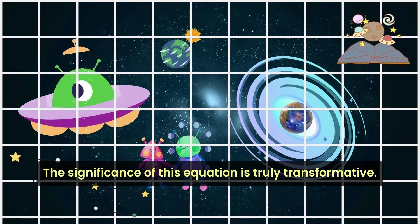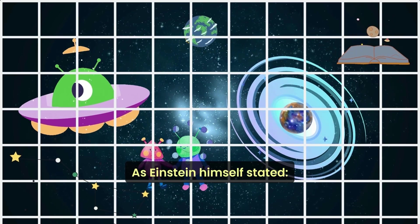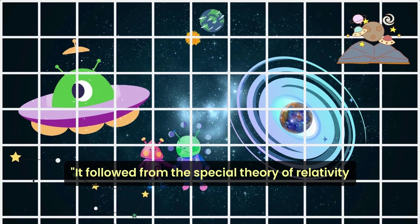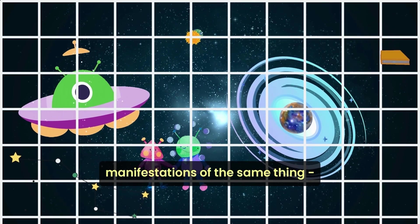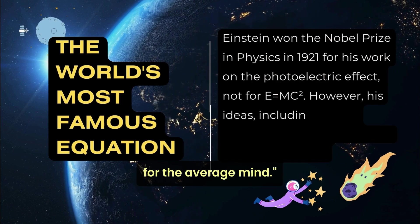The significance of this equation is truly transformative. As Einstein himself stated, it followed from the special theory of relativity that mass and energy are both different manifestations of the same thing, a somewhat unfamiliar concept for the average mind.